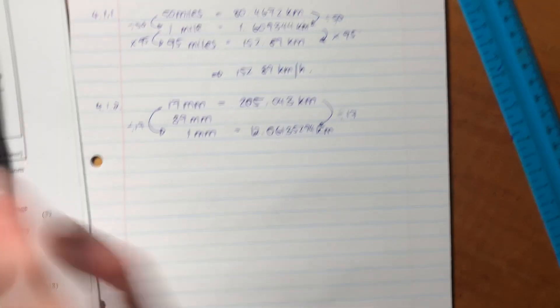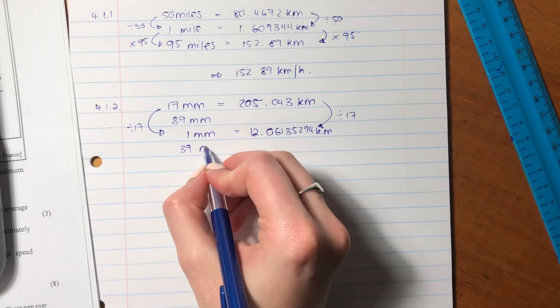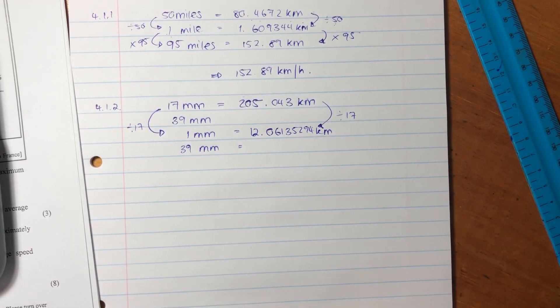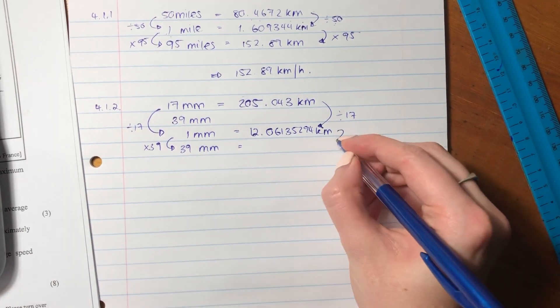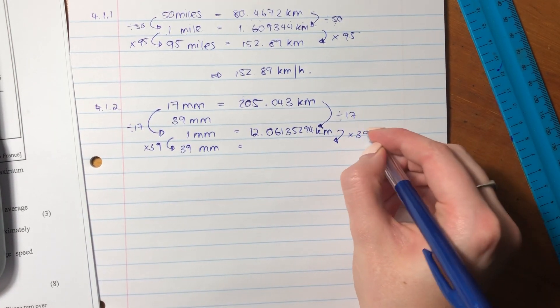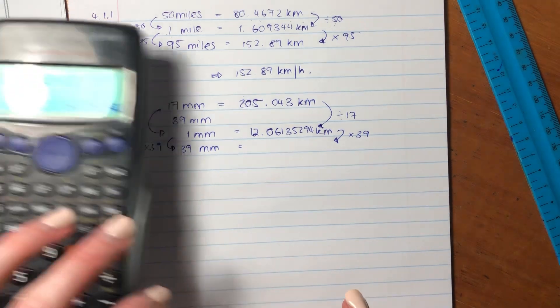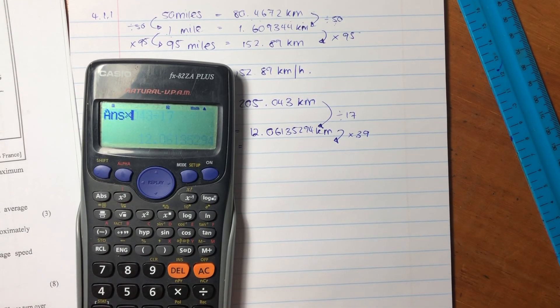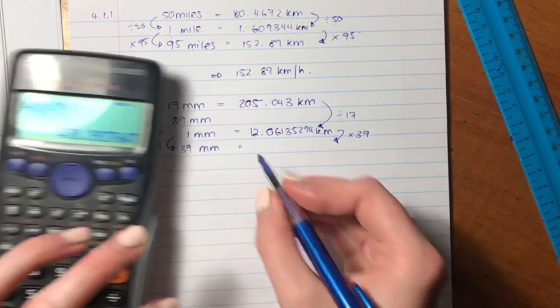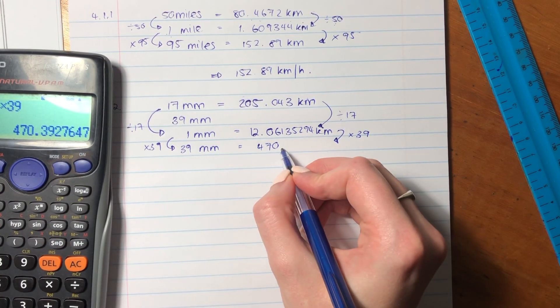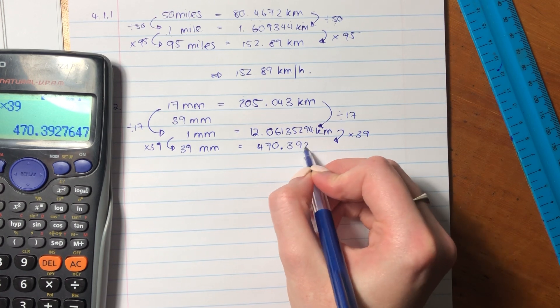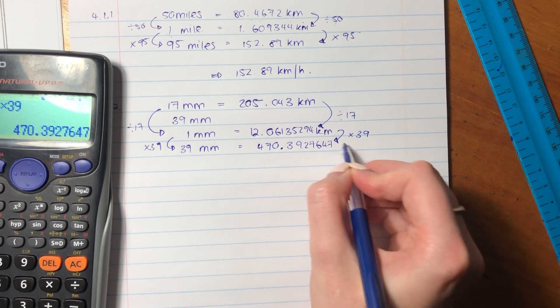So now we want to say, if we have 39 kilometers, what's going to happen? So we've times that side by 39. So let's times the other side by 39. So take your kilometers that you have there, times that by 39. And we see that that is 470.3927647 kilometers.